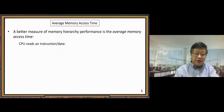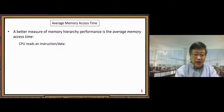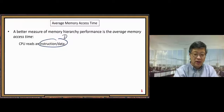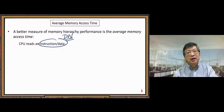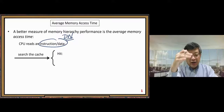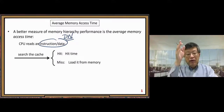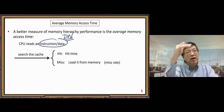The CPU reads an instruction or data — we don't need to separate them, we just consider a double word. First, we need to search that double word in the cache. There are two cases: a cache hit, where we spend a hit time, and a cache miss, where we need to load from memory and pay a large miss penalty.